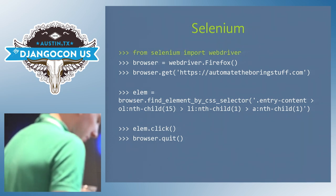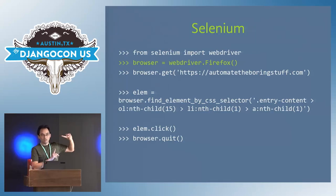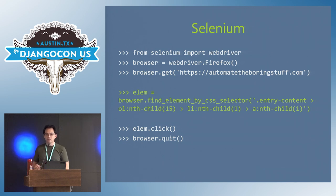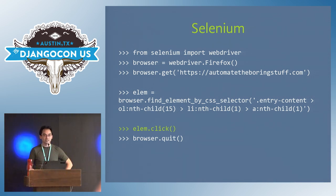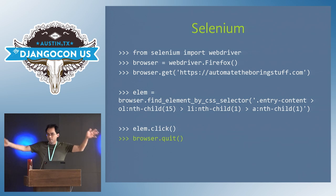Using Selenium is really simple. You import the module just like any other module. You call the Firefox function, which will actually launch an instance of Firefox on your computer. That gives you a browser object. You call the get method and send it to a website. Then you can use CSS selectors to find a particular HTML element on that webpage — like a link or a checkbox — and call the click method to click on it. When you're done, you call quit and the browser goes away.